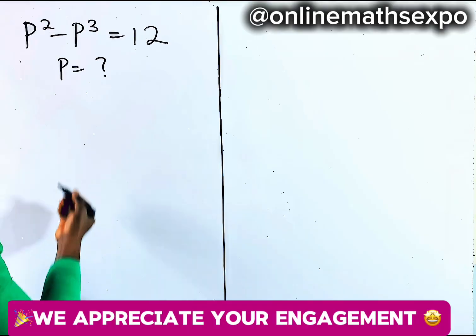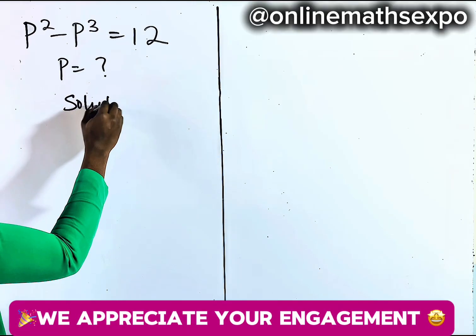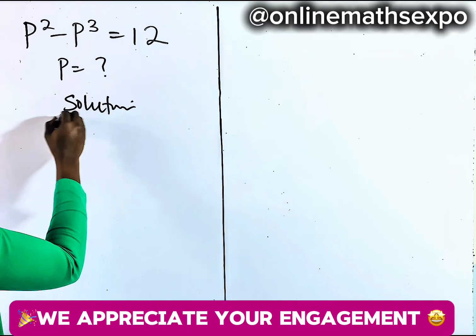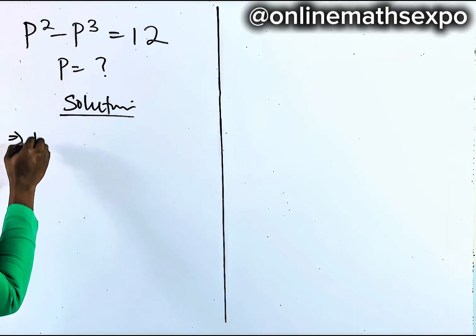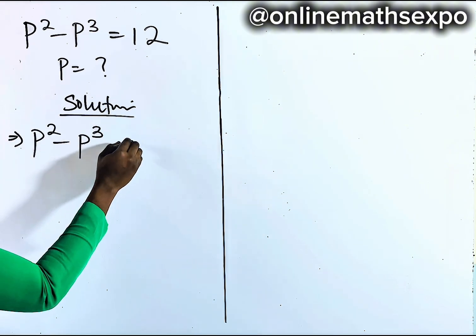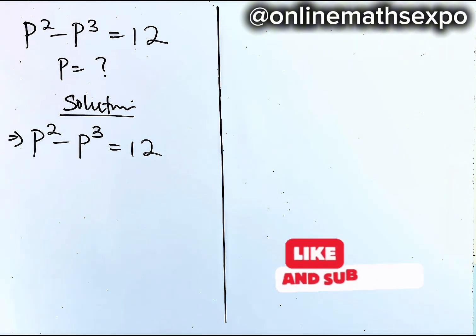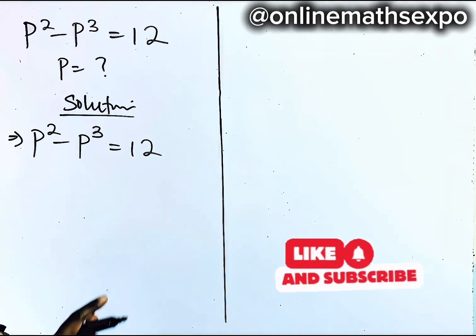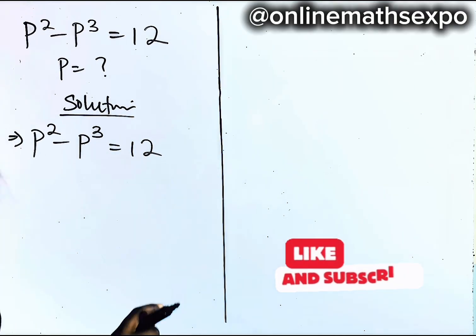So we're going to begin with our solution. Let's repeat what we have: P squared minus P cubed is equal to 12. What we do now is we're going to use the factoring method.